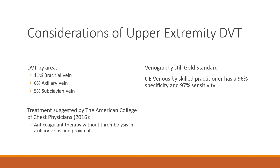Studies show that most upper extremity DVTs occur in the brachial vein, followed by the axillary vein, with the last 5% in the subclavian vein. The subclavian is the most difficult to evaluate because of its position posterior to the clavicle, making compression difficult. Fortunately, it's not the most common area for upper extremity DVT, but it remains a concern.